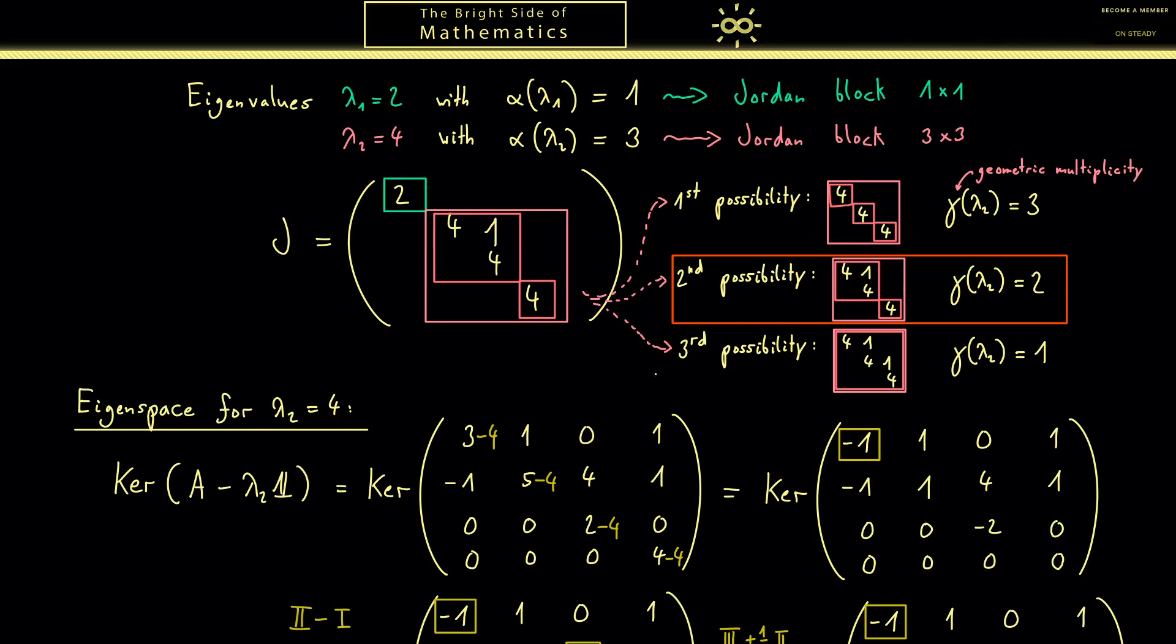Well, very good. Now you have seen one example for calculating a Jordan normal form, and then we can continue in the next video with that, where I show you a more complicated example where different things can happen. So thanks for listening and see you next time. Bye!